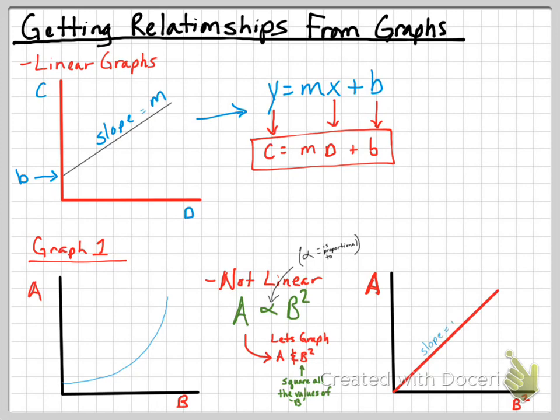Our slope again will be M. Our intercept will be B, but this happens to go through the origin, so we have Y equals MX only. The Y values will again become A and the X values will again become B. In this case, B squared. And so that is our relationship.